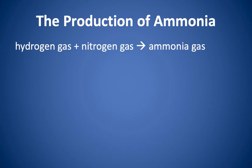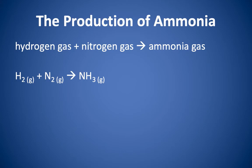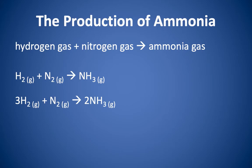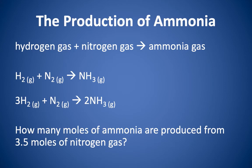The first example we're going to look at: hydrogen gas reacting with nitrogen gas to produce ammonia. We need to start with a balanced chemical equation. Hydrogen gas is H2, nitrogen gas is also diatomic — N2 — and ammonia's chemical formula is NH3. This equation is not balanced; we don't have the same number of hydrogen and nitrogen on both sides. To balance it, we need a coefficient of 3 in front of H2 and a coefficient of 2 in front of NH3. Then we have the same number of hydrogen and nitrogen atoms on both sides. Using this equation, we can answer: how many moles of ammonia are produced from 3.5 moles of nitrogen gas?